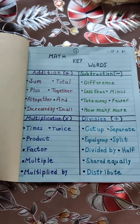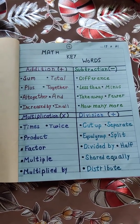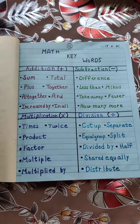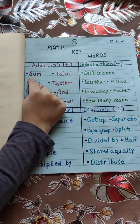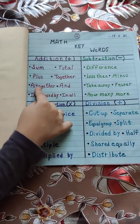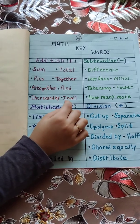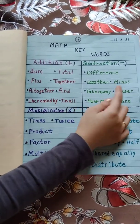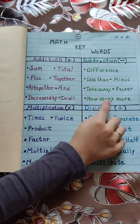My next topic is math keywords. These keywords will help you to solve word problems. Addition keywords are: sum, total, plus, together, all together, increased by, and in all. Subtraction keywords are: difference, less than, minus, take away, fewer, and how many more.